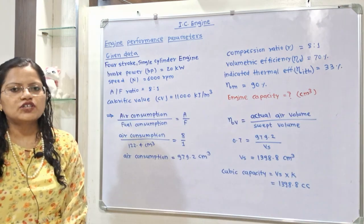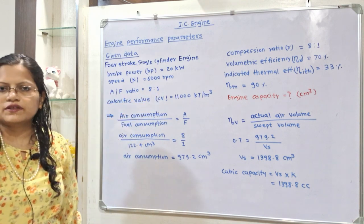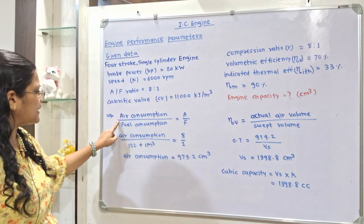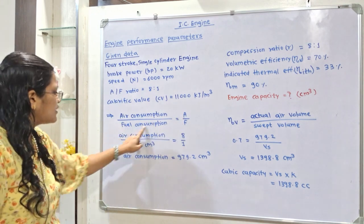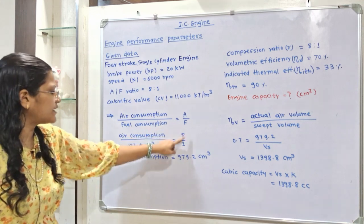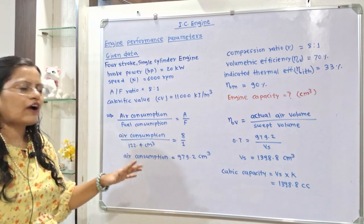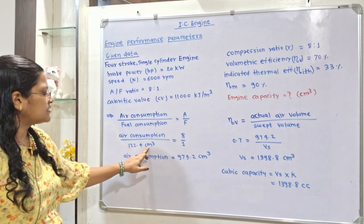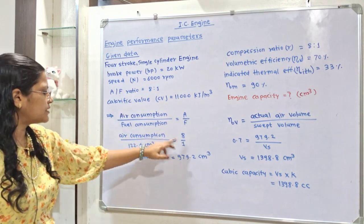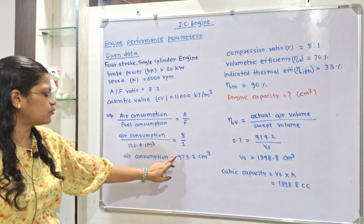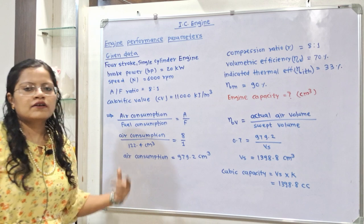From the fuel consumption, we calculate air consumption using the air-to-fuel ratio. Air consumption divided by fuel consumption equals 8 to 1. Fuel consumption is 122.4 cm³, so by cross multiplication, air consumption equals 979.2 centimeter cube.